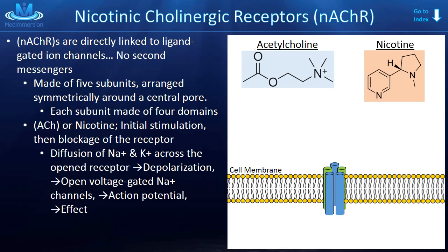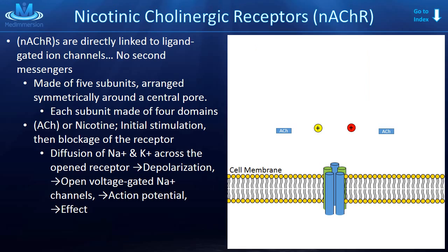Let me give you a quick visual example of what happens when these receptors are stimulated. Two molecules of acetylcholine come down and interact with the receptor slash ion channel. This causes a conformational change in the shape of the ion channel, which opens the central pore to allow ions — such as sodium, potassium, or calcium — through.